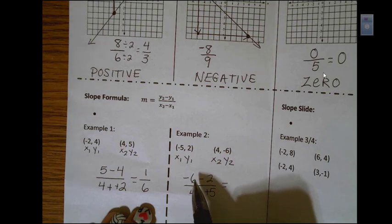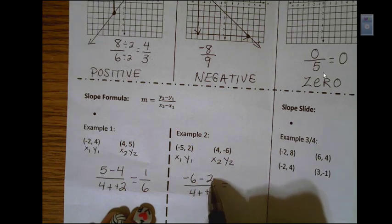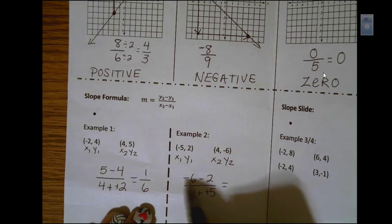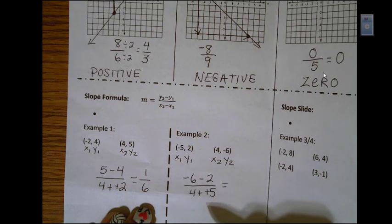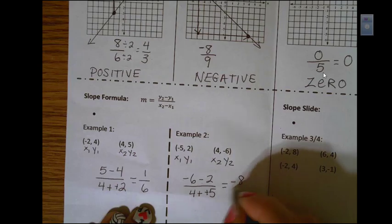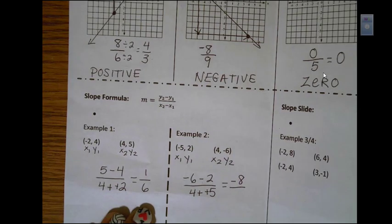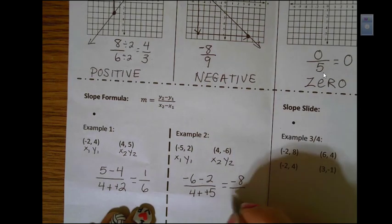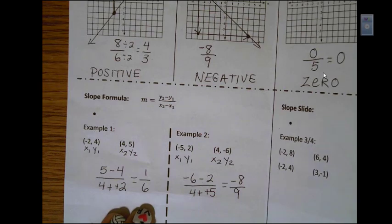Now with integers, a negative minus a negative, I think of they are the same sign. I'm going to add them together. Sign stays the same. On the bottom, 4 plus 5, they're both positive. And I get 9. So negative 8 ninths would be the answer for that slope.